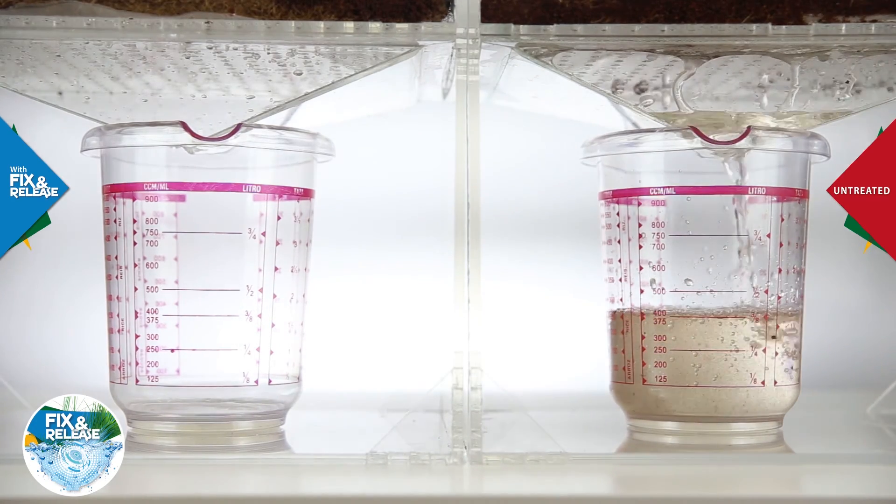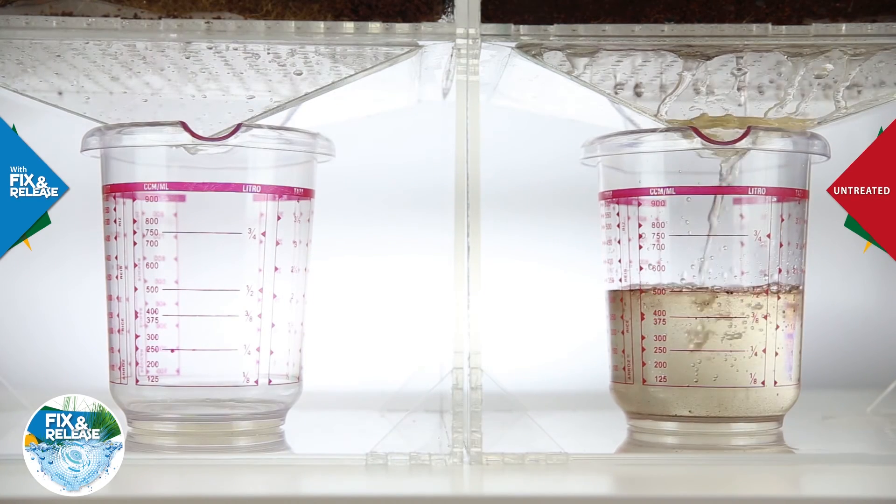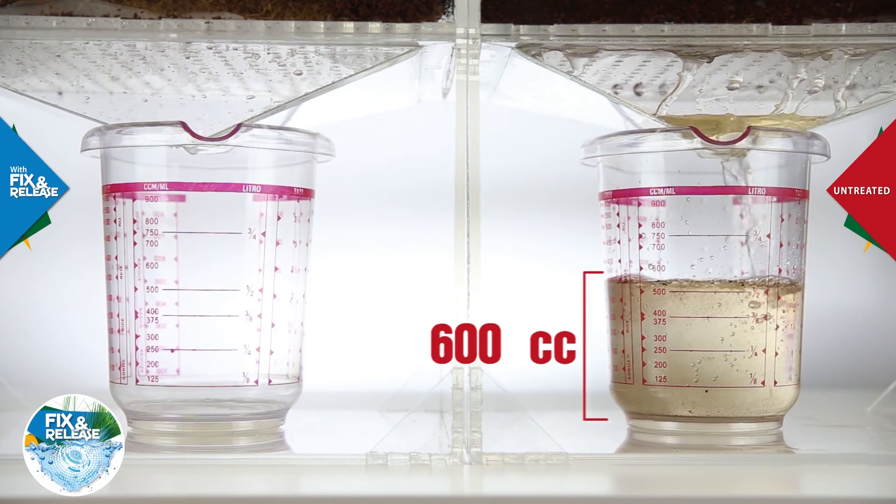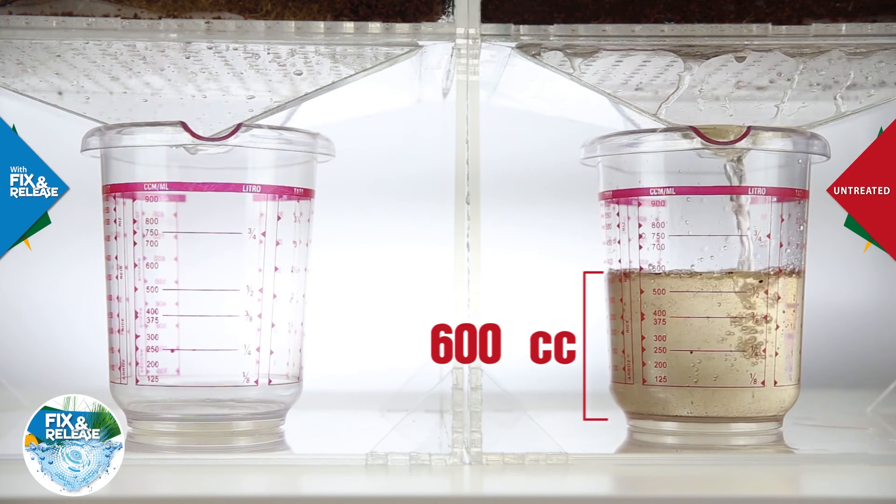On the other hand, we can see that the untreated part wasted 600 cc, which represents the leaching and the further economic loss for the farmer.